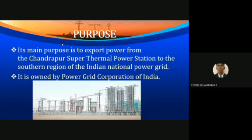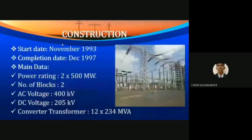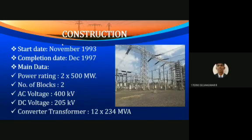It is owned by Power Grid Corporation of India. Construction-wise, this station also has two blocks, each carrying 500 megawatts. The AC voltage rating is 400 kV and the DC voltage rating is 205 kilovolt. The station has 12 converter transformers, each with a rating of 234 megavolt-ampere.